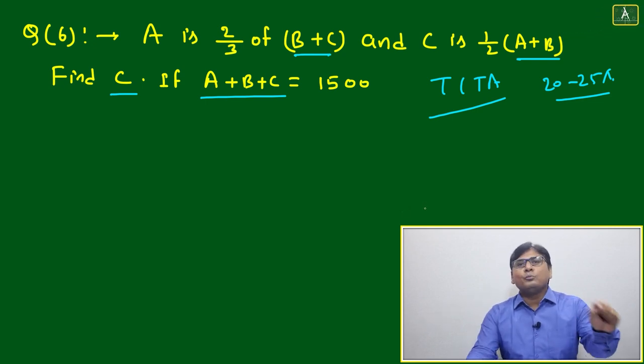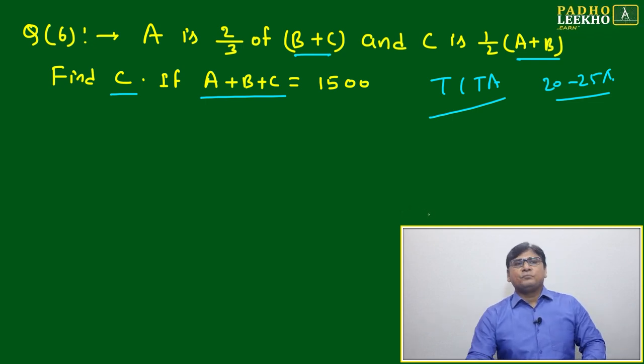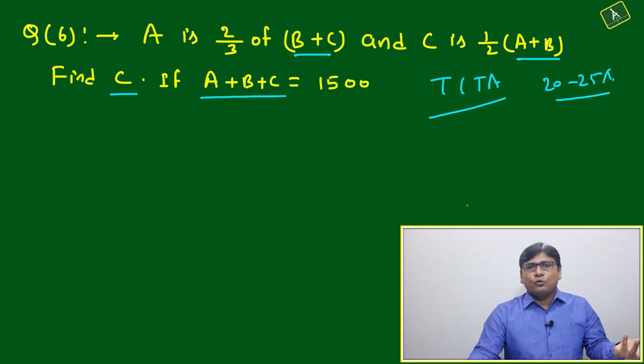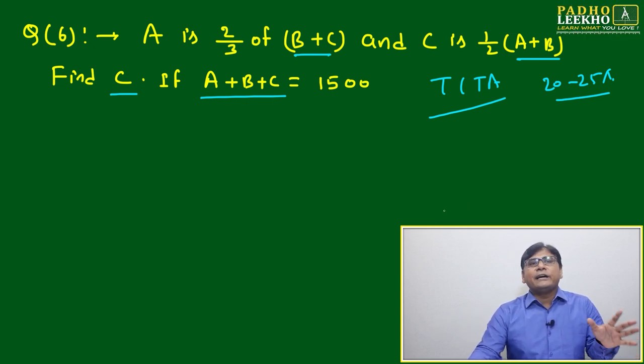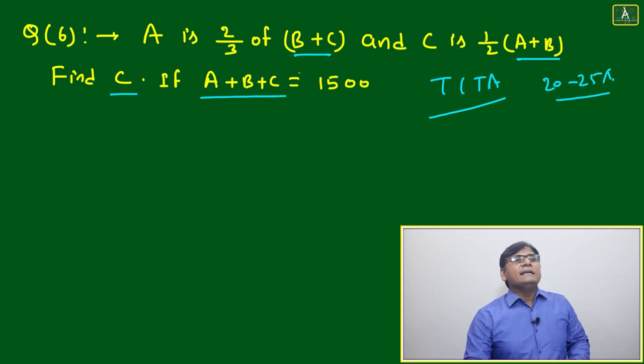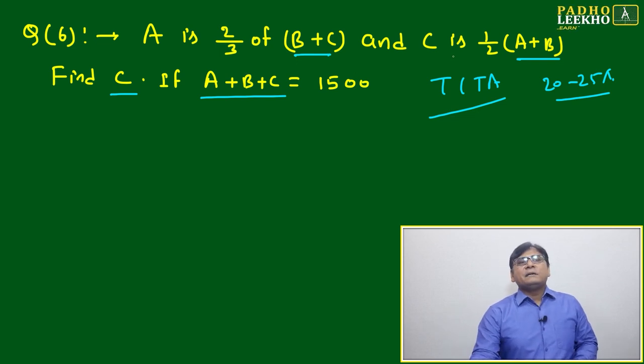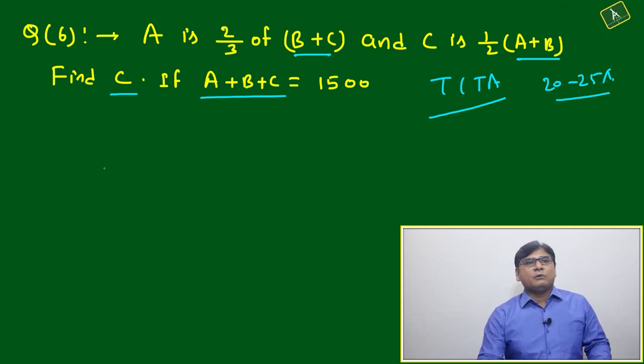You have to solve and make your answer input. If it will be wrong, then it will be wrong only. But one benefit is there: if it is wrong, no negative marking, only for TITA. Here A is expressed in terms of B plus C, and C is expressed in terms of A plus B.